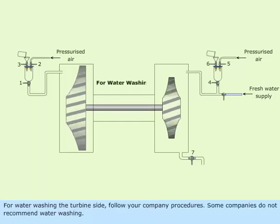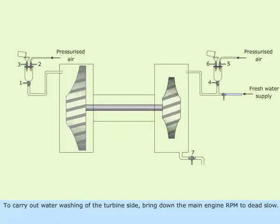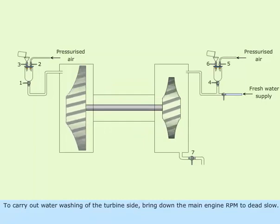For water washing the turbine side, follow your company procedures. Some companies do not recommend water washing. To carry out water washing of the turbine side, bring down the main engine RPM to dead slow.